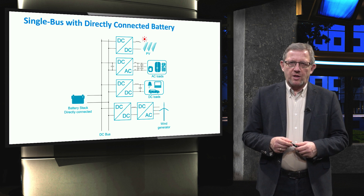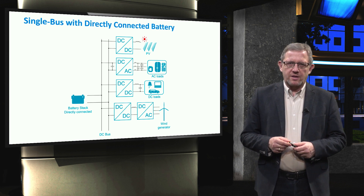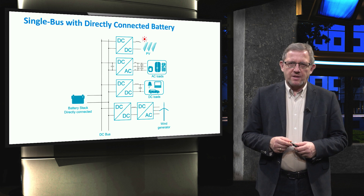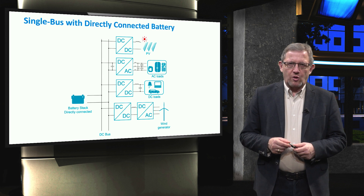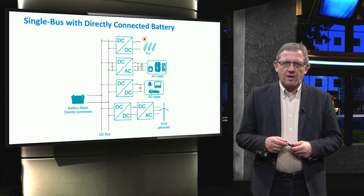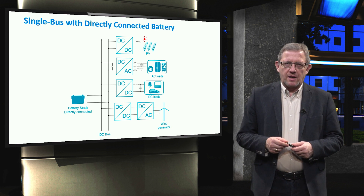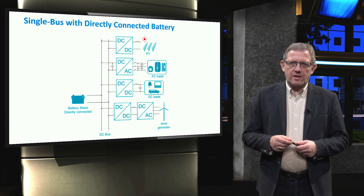Single bus topology is one of the most widely used ones for DC microgrids, on the basis of which more complex multiple DC microgrids can be built up. This figure on the slide shows an example of such a single bus topology where one single battery is directly connected to the DC link.